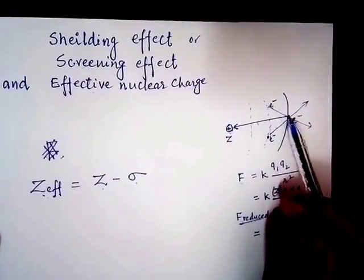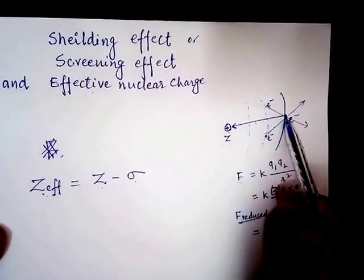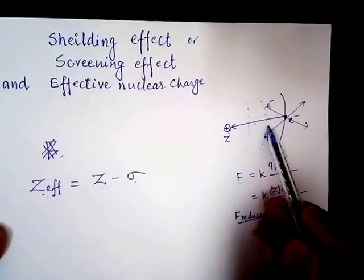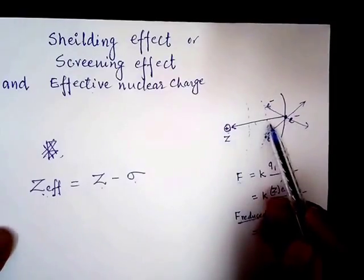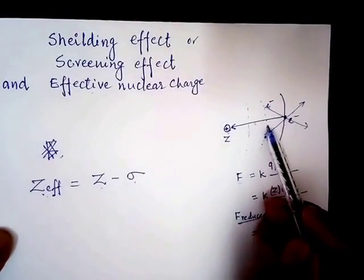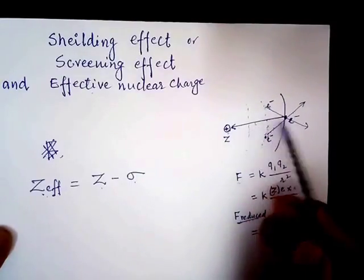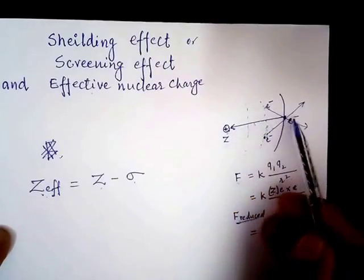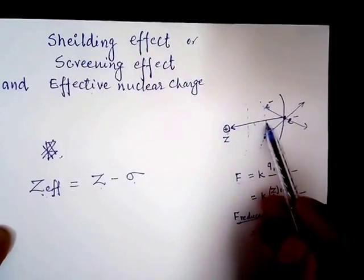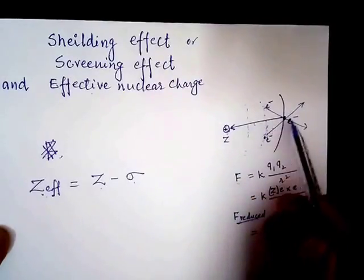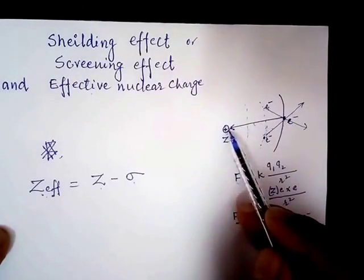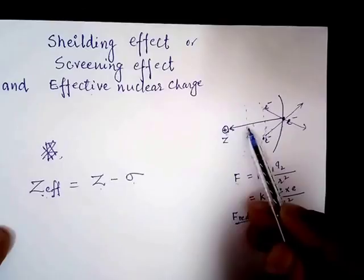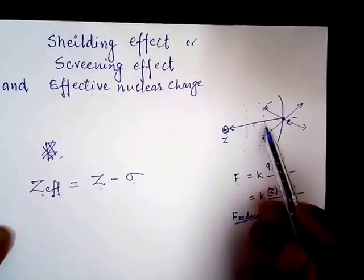The force experienced by the valence electron is less than what it would experience if there were no core electrons. In other words, the core electrons are shielding the valence electron from the nuclear charge — they are shielding or screening the valence electron from the attraction of the nuclear charge. This effect is known as the shielding effect or screening effect.